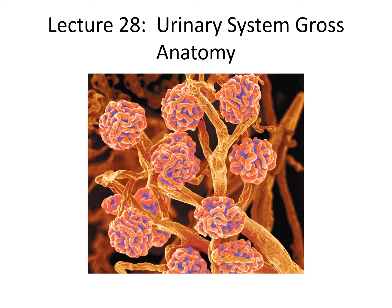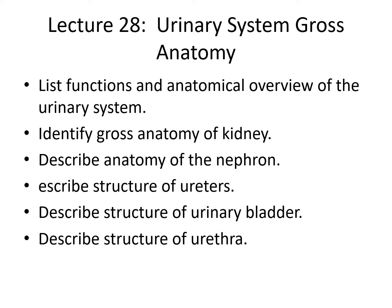Hi everyone. This is lecture 28, the first of three lectures on the urinary system. In this lecture, we're going to cover the overview of the gross anatomy of the urinary system. I've simplified it for this semester and took out a lot of excess anatomy, but we'll talk about mostly the micro anatomy. We'll talk about the basic functions, general structures of the kidney and the urinary system, but we're going to concentrate more on the nephron.